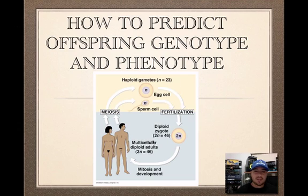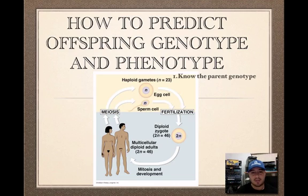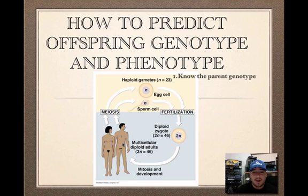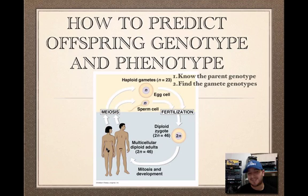Just remember these rules and you can always think about this picture. First thing we have to do to figure out what the baby is going to look like: we have to know, number one, what is the parent genotype? In other words, what are mom's instructions in her body cells, and what are dad's in his body cells? But then we know they have to make the sperm and the egg. So now that we know their body cell genotype, we can figure out through meiosis what mom's egg cell genotype will be, and then what dad's sperm cell genotype will be.